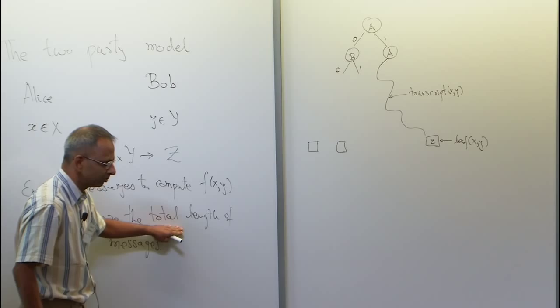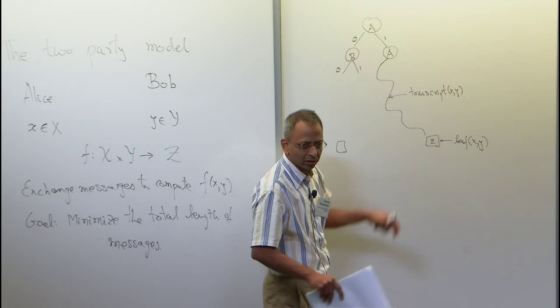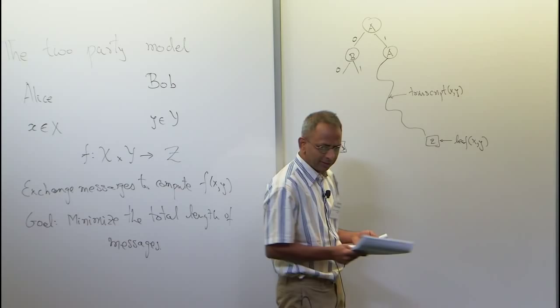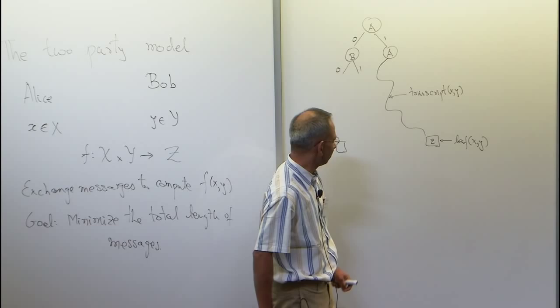The total length of messages is easily seen in the tree — it is the depth of the tree, the length of the longest path from the root to a leaf. So the goal when they built this tree was to build the tree of minimum height which correctly computes f.